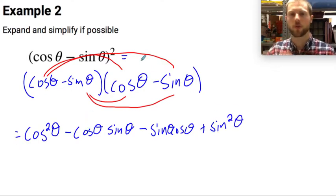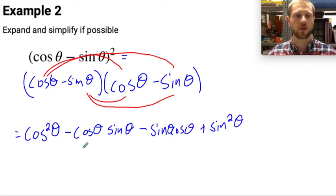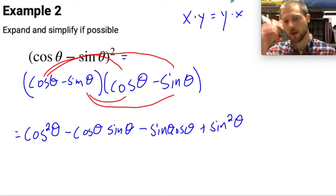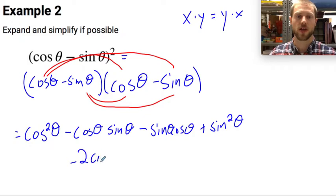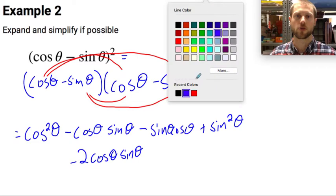Now I just want to do a little bit of a rearrangement and simplifying. So this cosine of theta sine theta is the same thing as sine theta cosine theta. In the same way that x times y is equal to y times x. I can combine this and say this is the same thing as minus 2 times the cosine of theta sine theta.